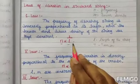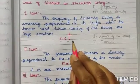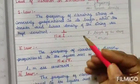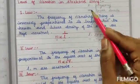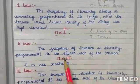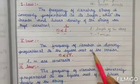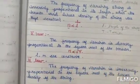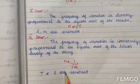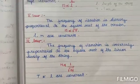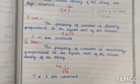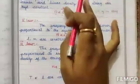Second law: n is directly proportional to the square root of tension. Third law: n is inversely proportional to the square root of M. A simple trick — when writing about n and L, M and T are constants; when writing about n and T, L and M are constants.